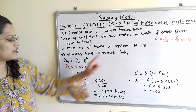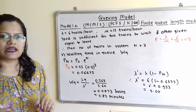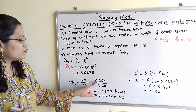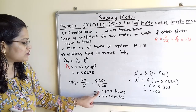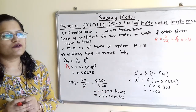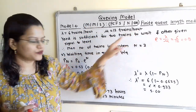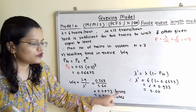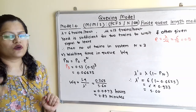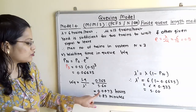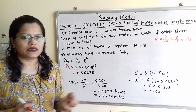Finally, Wq = Lq / λ' = 0.265 / 5.60 = 0.0473 hours. Since arrival and service rates were given in hours, this waiting time is in hours. Converting to minutes: 0.0473 × 60 = 2.83 minutes.